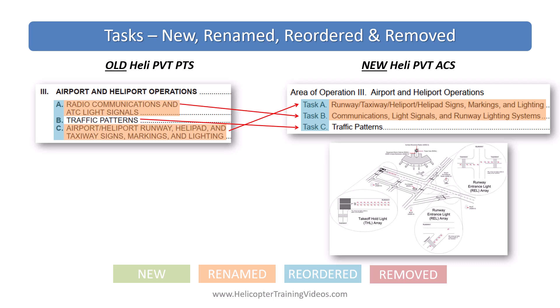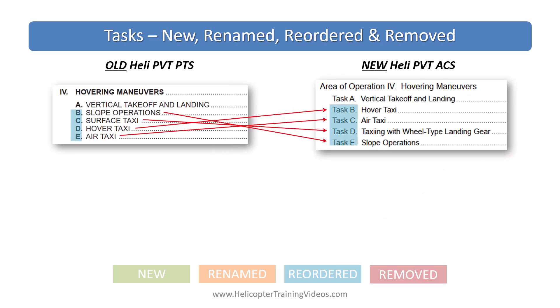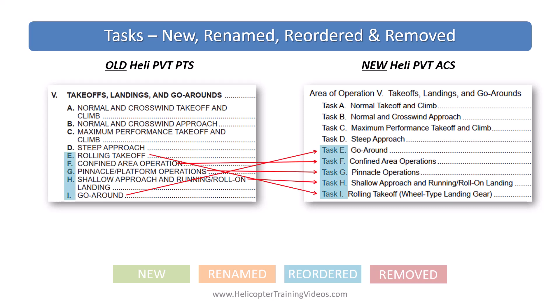There's a big reorder in the next section with some slight name changes for clarity. Surface taxi is now taxiing with wheel-type landing gear. Under task five, there's a significant order change, and they also adjusted the name from normal and crosswind takeoff and climb to just normal takeoff and climb, which is somewhat inconsistent because crosswind is still part of the task content and was not removed from the normal and crosswind approach task.